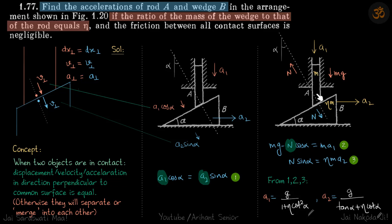We have a rod of mass m and a wedge of mass eta m. We need to find their accelerations. Assuming that on the common surface the normal reaction on each body is n, we can write F equals ma for each of these bodies. So for the rod it will be mg minus n cos alpha equals ma1. And for wedge towards right we can write n sin alpha equals eta m a2.